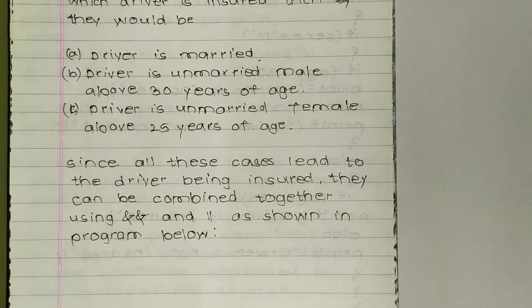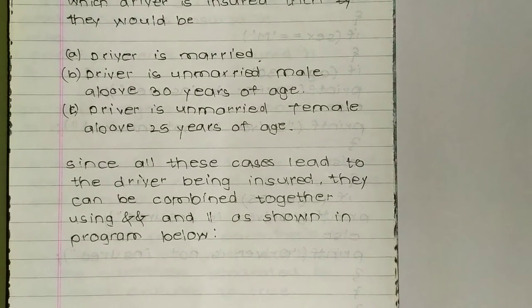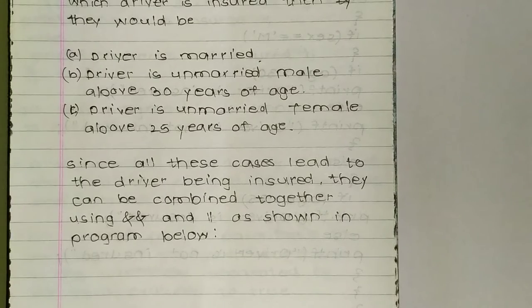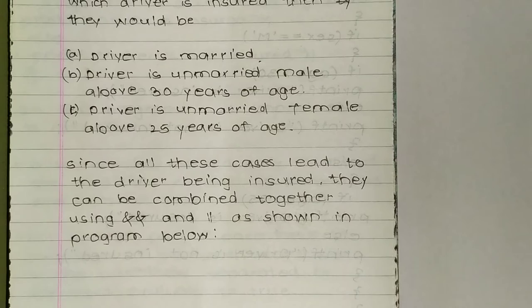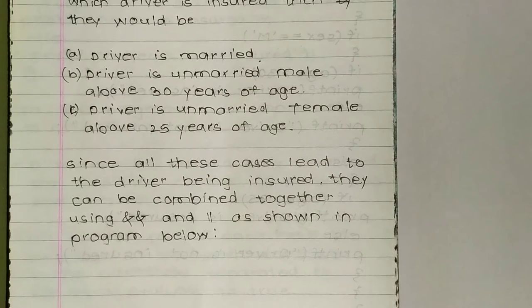A) driver is married, B) driver is unmarried male above 30 years of age, C) driver is unmarried female above 25 years of age. Since all these cases lead to the driver being insured, they can be combined together.